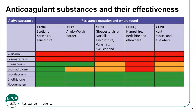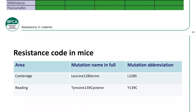It's worth noting that out of all samples tested, about a third showed fully susceptible rodents, with two-thirds carrying one of these mutations. The levels vary by area — Hampshire has fewer susceptible rodents than other parts of the country. Keep this in mind when looking at resistance mapping, as susceptibility levels may be somewhat different across regions.